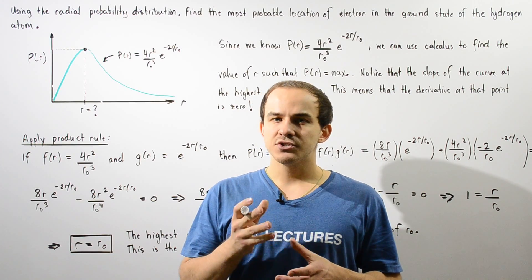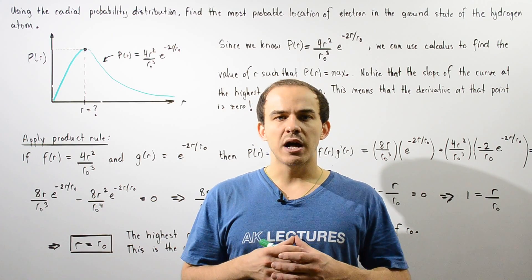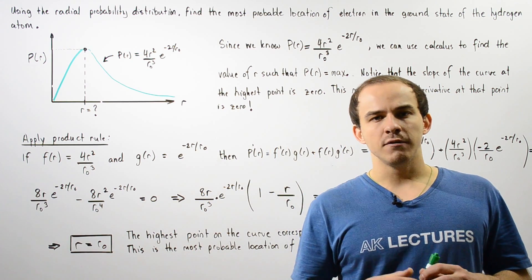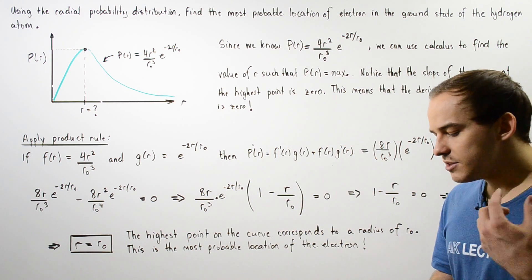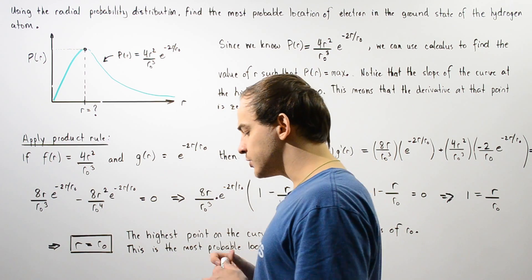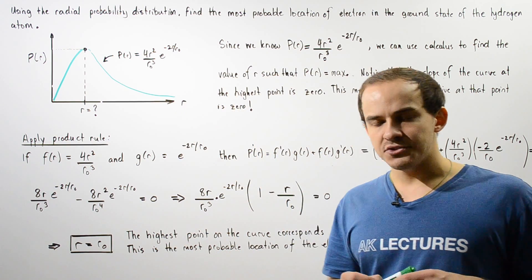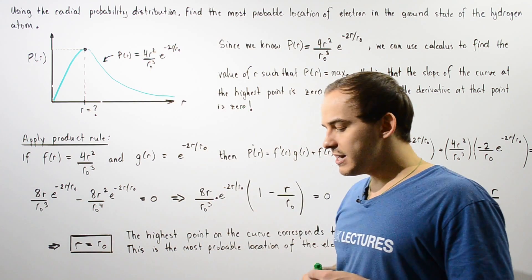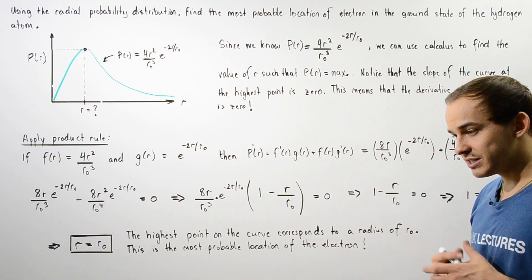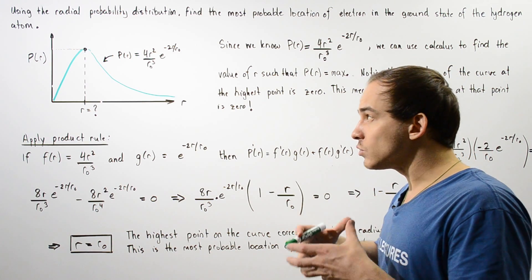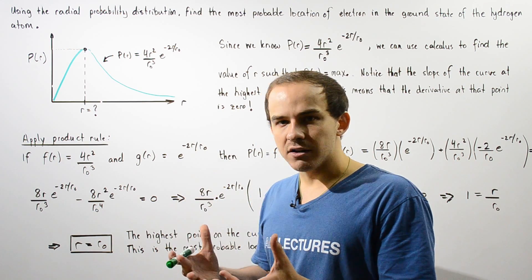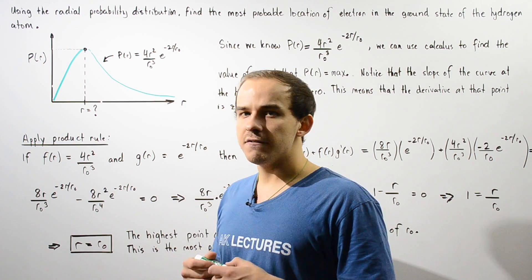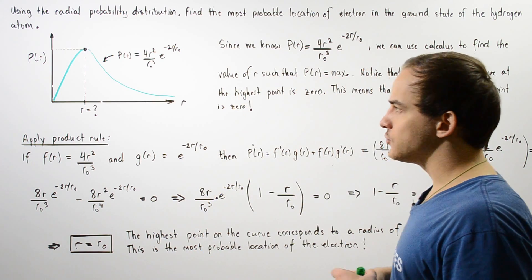Let's suppose that we are asked to use the radial probability distribution to calculate the most probable location of our electron inside the ground state of the hydrogen atom. Basically, we have to use the radial probability distribution equation to calculate where our electron is most likely found at any given moment in time around the nucleus of the ground state hydrogen atom.